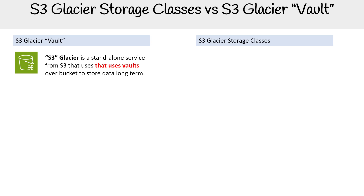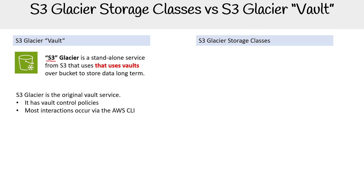S3 Glacier — I remember when it first came out, I could have sworn it was just called Glacier. Then they added the S3 in front to make you think it's part of the S3 service. It's not — it's a standalone service from S3, and it uses vaults instead of buckets. It's the original vault service, or archiving service, for long-term objects. It has vault policies, everything is usually done through the AWS CLI, there's not a lot you can do in the console. Enterprises are still using Glacier vault, probably because they have data sitting in there for seven years, so the service isn't going away.